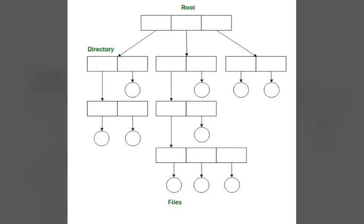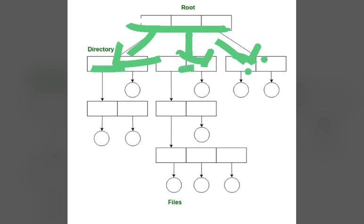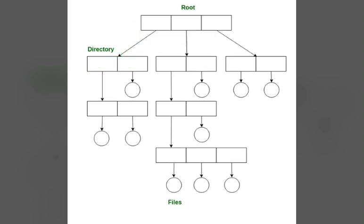In the acyclic graph directory, this structure is used in situations like when two programmers are working on a joint project and need to access files. The associated files are stored in subdirectories, separating them from other projects. Since they are working on a joint project, they want subdirectories shared into their own directories — the common subdirectories should be shared.